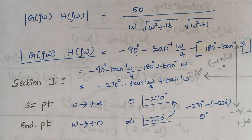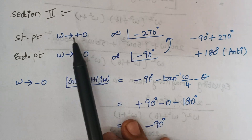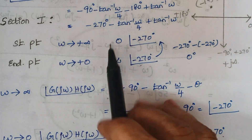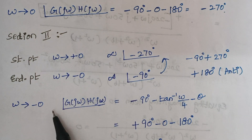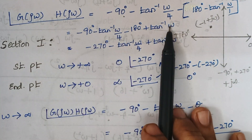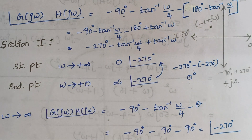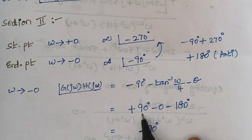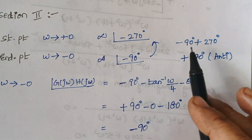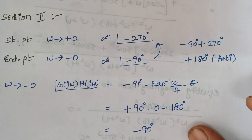Section 2 starts at ω = +0 and ends at ω = −0. At ω = +0 we have infinity at −270°. When we substitute ω = −0, the tan⁻¹ terms become 0, but the −90° becomes +90°, giving +90° + 0° − 180° = −90°. Subtracting: −90° − (−270°) = +180°, which is anticlockwise direction. So we rotate the plot 180° anticlockwise in section 2.